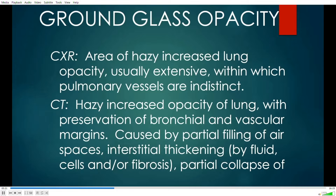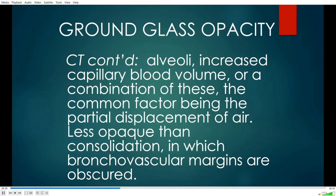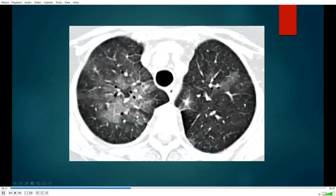Ground glass opacity is a hazy increased opacity of the lung with preservation of bronchial and vascular margins — that's the most important part. It's caused by partial filling of air spaces, interstitial thickening, by fluid, cells, and/or fibrosis, partial collapse of alveoli, increased capillary blood volume, or a combination of these, the common factor being partial displacement of air. It's less opaque than consolidation, in which bronchovascular margins are obscured. The key point: it's hazy, and you can see the pulmonary blood vessels and branching arteries through it — you won't see that in consolidation or in a mass.